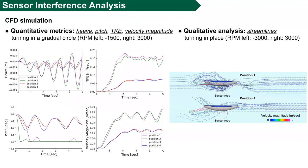Also, by using computational fluid dynamics, we tested sensor interference caused by discharging waters from direct interactions with motor locations. We proposed new quantitative metrics for the sensor interference. First, pitch and heave — this is to minimize the motion's amplitude and equilibrium time, which would overall minimize negative effects on sensor readings. The other metrics were turbulent kinetic energy and velocity magnitude. In addition, we checked quantitatively streamlines depending on the design.